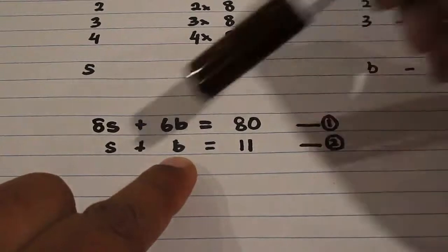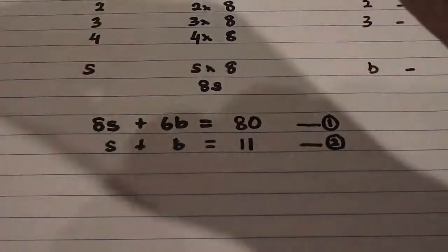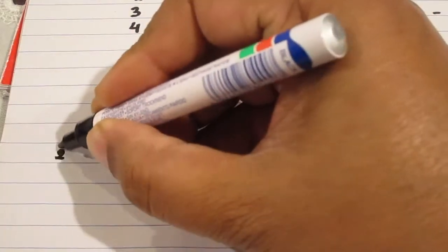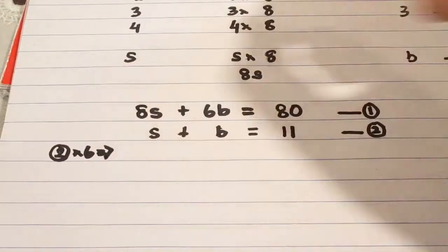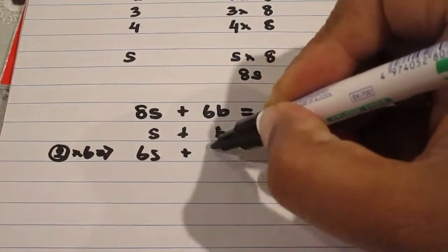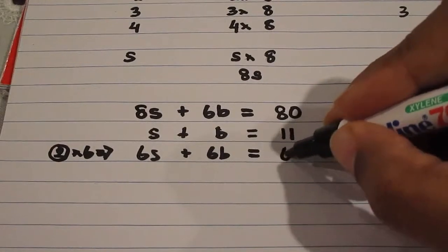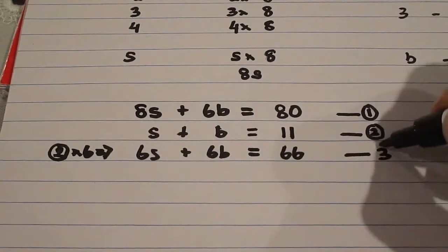Since there is b here, if I multiply this whole equation number 2 by 6, so I will write that down, equation 2 times 6, and that will give me 6s plus 6b equals 11 times 6, which is 66, and I will call that equation number 3.